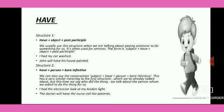The form is: subject plus have plus object plus third form of verb or past participle. For example: 'I had my car washed' — means I didn't do it myself; I told somebody to wash my car. Next example: 'John will have his house painted.'